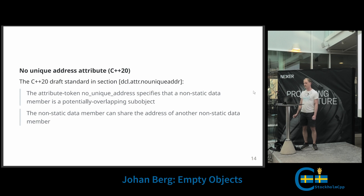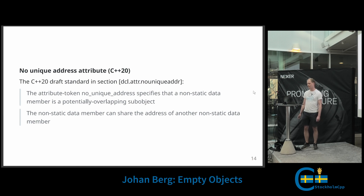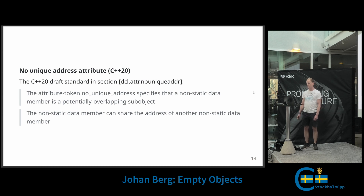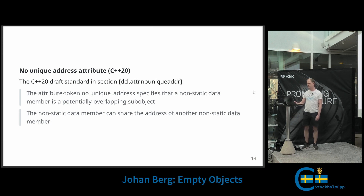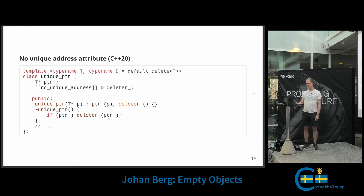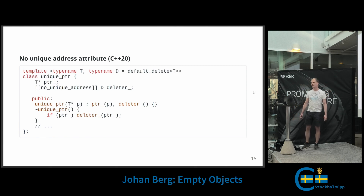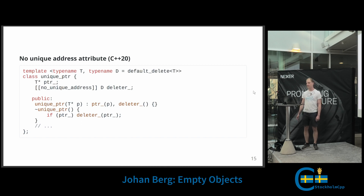In C++20, we have another way to achieve this: an attribute called no_unique_address. The standard says it specifies that a non-static data member is a potentially overlapping sub-object, and that the non-static data member can share the address of another non-static data member. So if we mark the deleter with the attribute no_unique_address, and the deleter is empty, it can share the same address as the pointer member — so the size will be optimized out. And now we're back to more readable code.